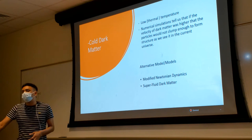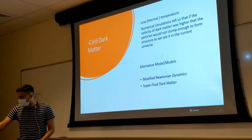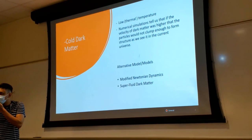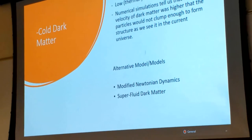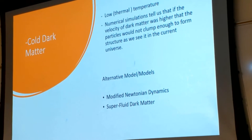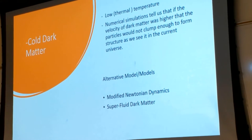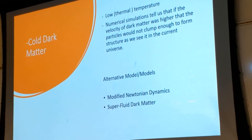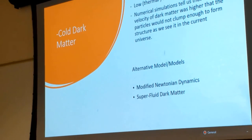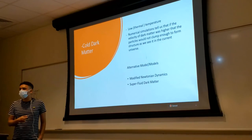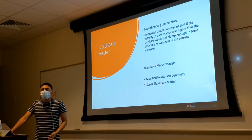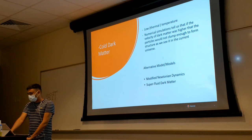Our model of cosmology is lambda CDM — cold dark matter. Numerical simulations tell us that if the velocity of dark matter particles were really high, they would just move around the universe and never clump enough to form structure — the galaxies, clusters, and superclusters we observe. Our current best model is the cold dark matter model. There are alternatives: modified Newtonian dynamics, and also a superfluid dark matter model — a relatively new field proposing dark matter undergoes phase changes inside certain galaxies.